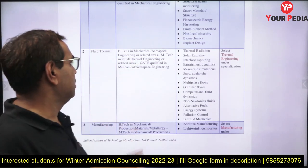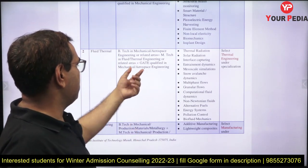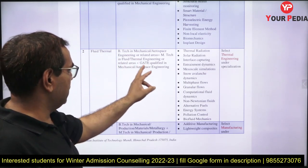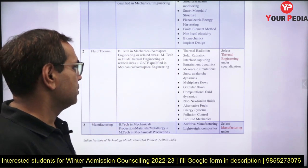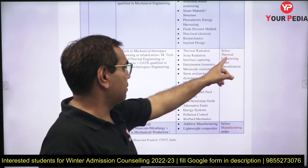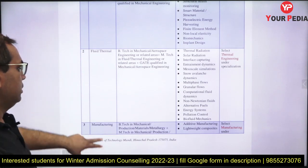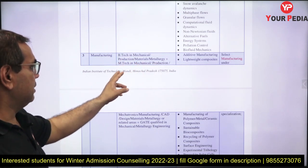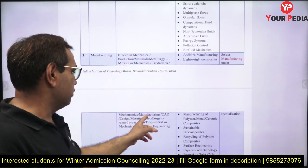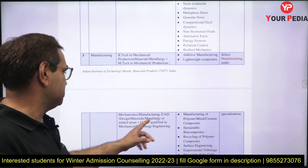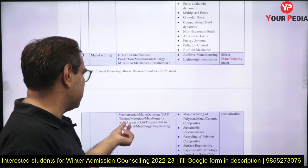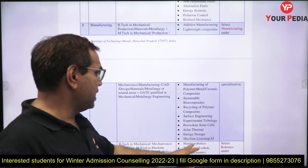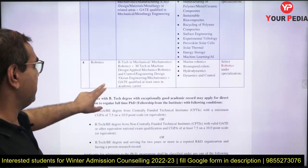For Fluid Thermal, the criteria is the same but GATE score in both Mechanical and Aerospace are allowed. So if you want to do PhD in Fluid Thermal, your GATE score in Aerospace is also acceptable. For Manufacturing, BTech in Mechanical, Production, Materials, or Metallurgy, plus MTech in related areas, and GATE score in Mechanical or Metallurgy is required.